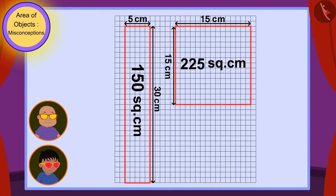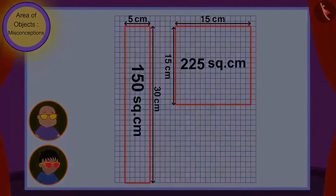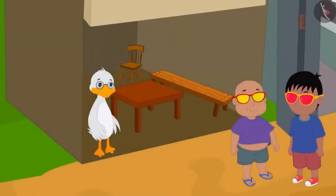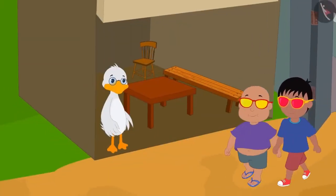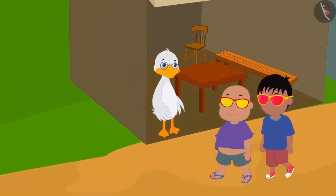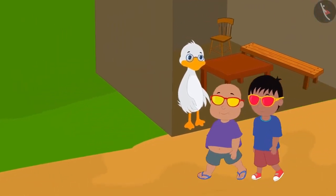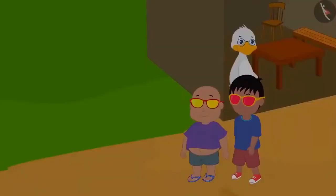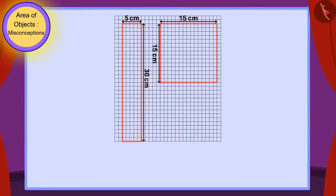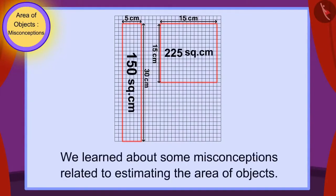Raju and Bablu found the area of the surfaces of both tables. Bablu told Raju that even though the rectangular table has a longer edge, the square table has a larger area and is therefore bigger. Raju understood his mistake and both friends put on their glasses and started walking once again. In this video, we learned about some misconceptions related to estimating the area of objects.